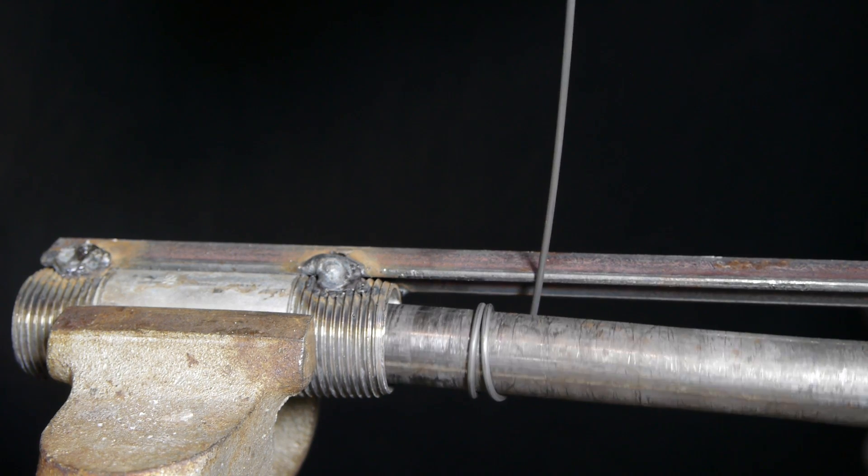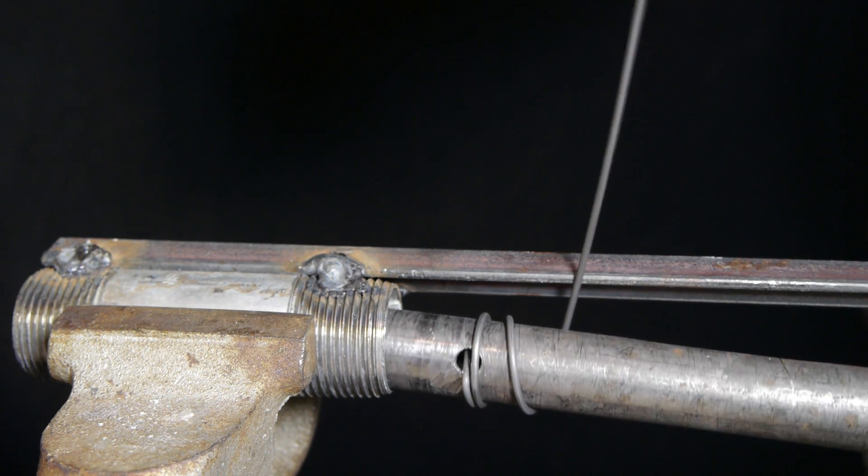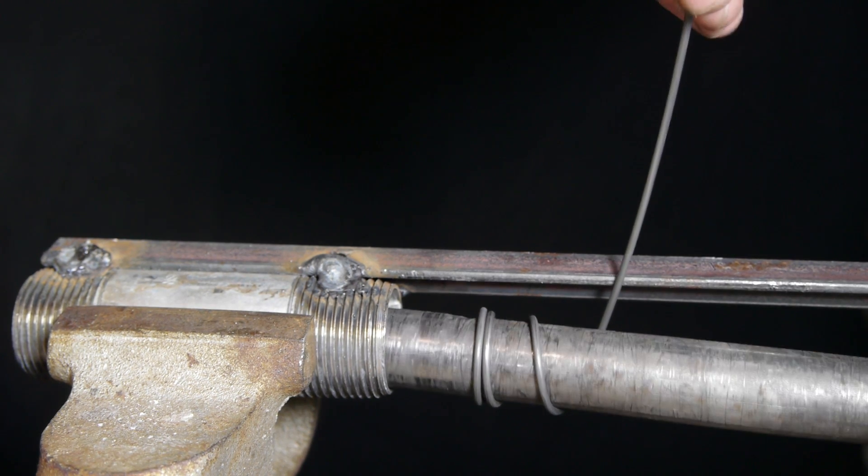The piece of angle iron gives the wire a solid object to brace against, so it only takes minimal effort to guide the coils to whatever spacing you'd like by hand.